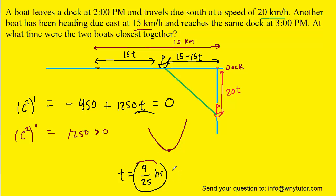Now 9 twenty-fifths of an hour, if we multiply that by 60, yields a value in terms of minutes of 21.6. Now remember that time 0 was at 2 o'clock PM. So we can say that 21.6 minutes after 2 PM, the boats will be at a minimum distance apart.